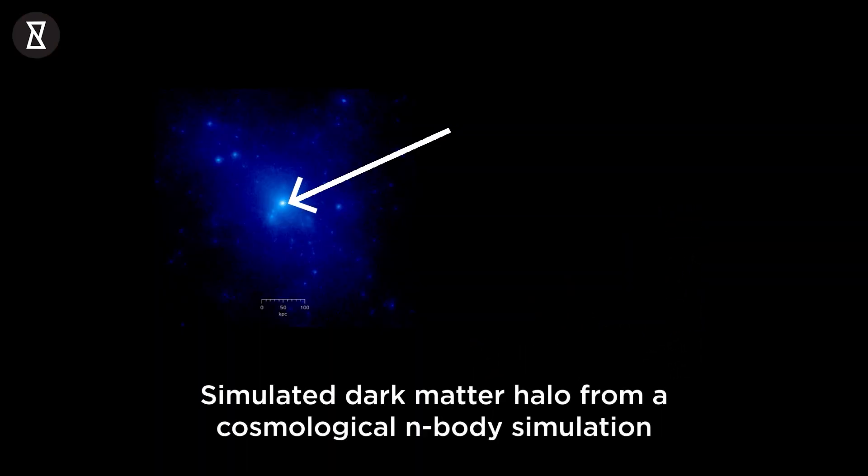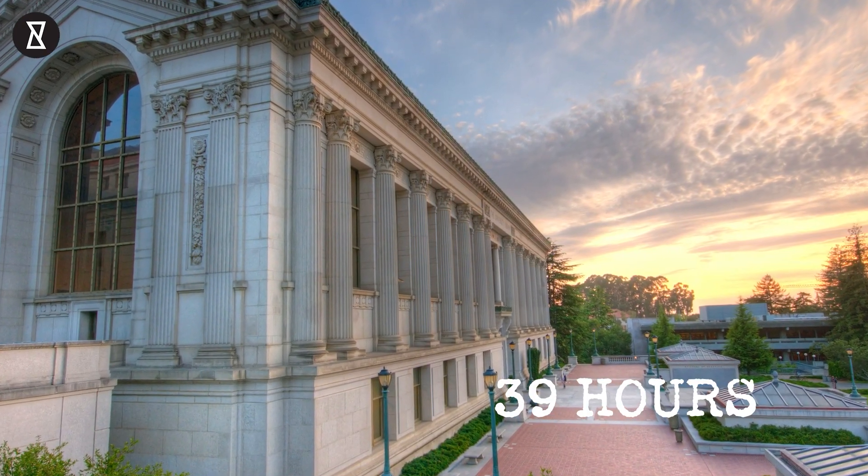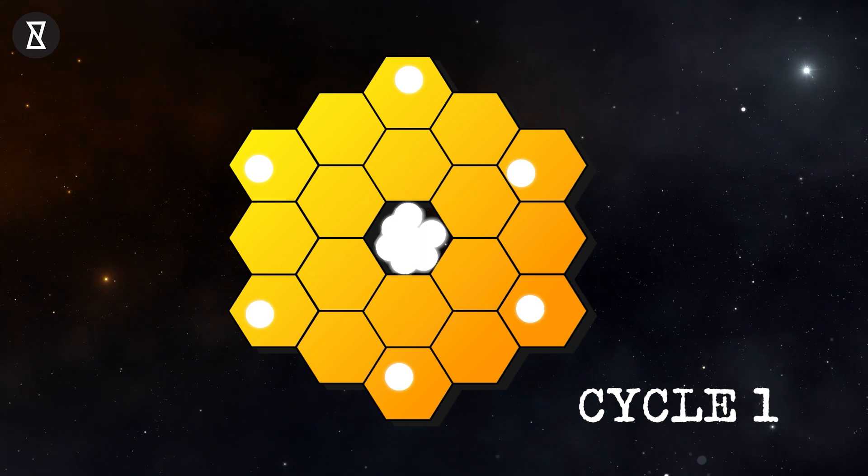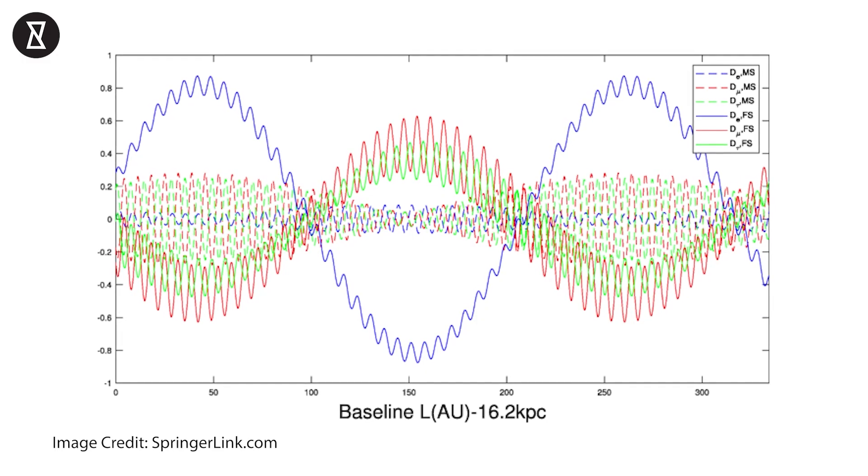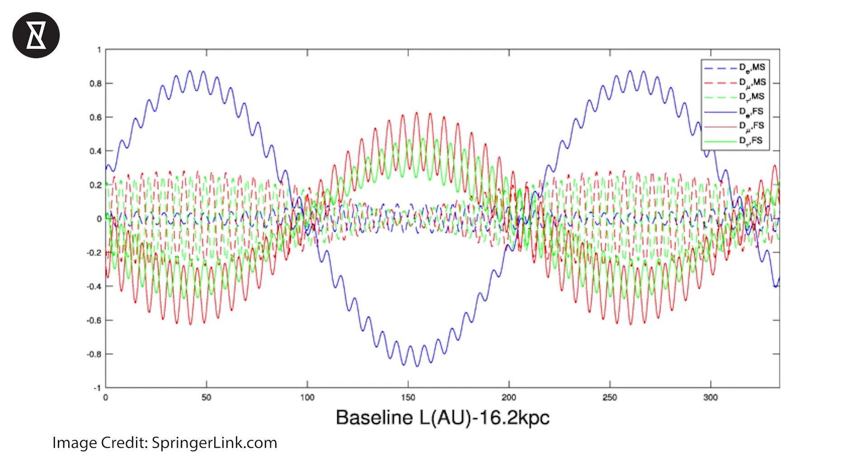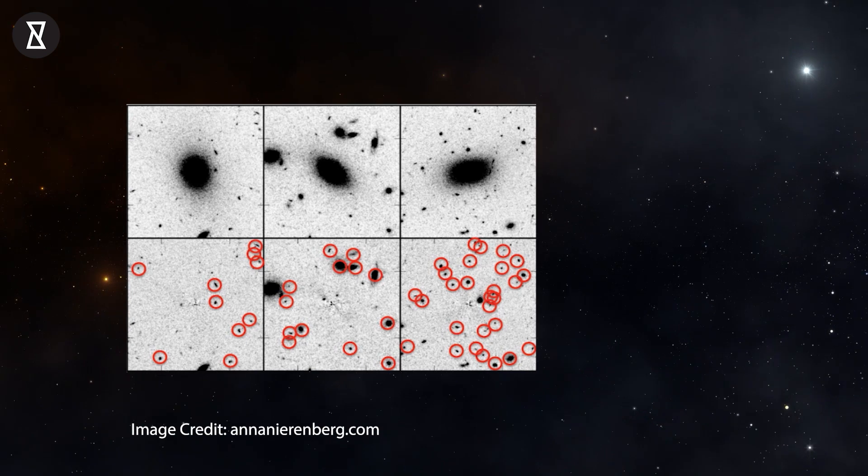Cold dark matter simulations show dark matter clumping into small blobs, continually snowballing and merging until large structures like the Milky Way are formed. These gravitationally bound blobs of dark matter are known as halos. Anna Nierenberg, assistant professor of physics at University of California, was awarded 39 hours of observing time during JWST cycle one to look for small dark matter halos. Many models, including the baseline dark matter model, predict the existence of small halos that do not actually contain galaxies.